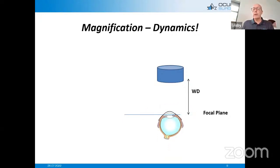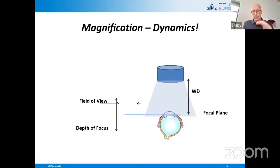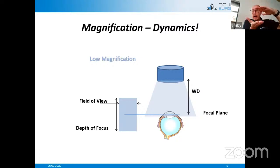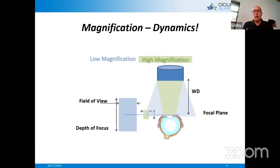We want to bring the focal plane down to the limbus. At any given magnification, we have a field of view and a depth of focus. At low magnification, the depth of focus is very high and field of view is wide, whereas at high magnification, we have a very shallow depth of focus and a narrow field of view. This is the reason why sometimes, if you zoom in with a microscope, you will go out of focus — and I will get back to this.